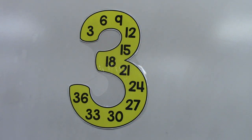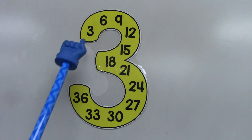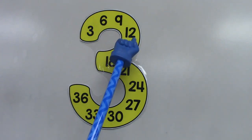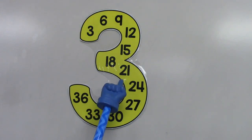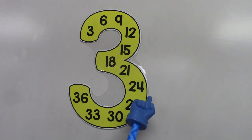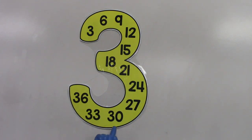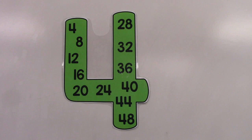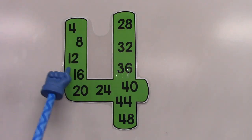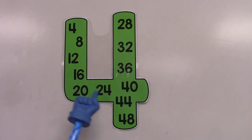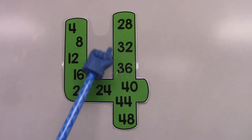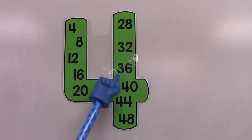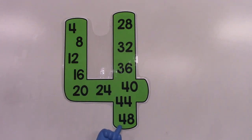Let's skip count by three: 3, 6, 9, 12, 15, 18, 21, 24, 27, 30. We're not done. Let's skip count by the number four: 4, 8, 12, 16, 20, 24, 28, 32, 36, 40, 44, and 48. Counting fours is really great.